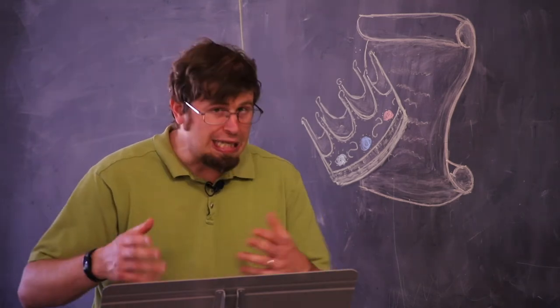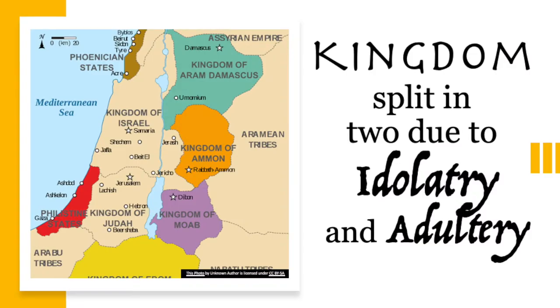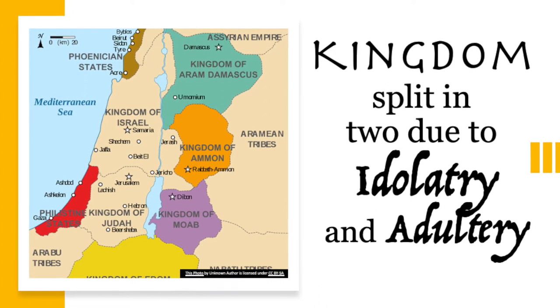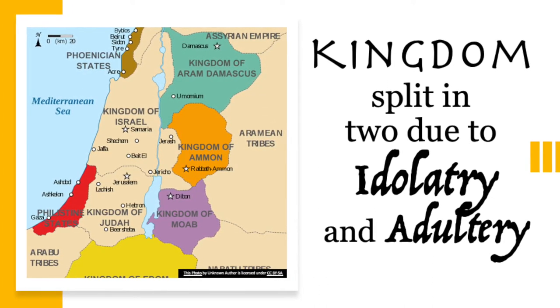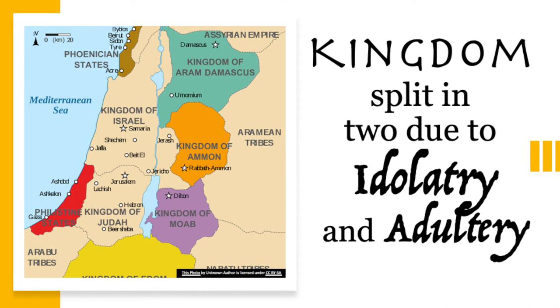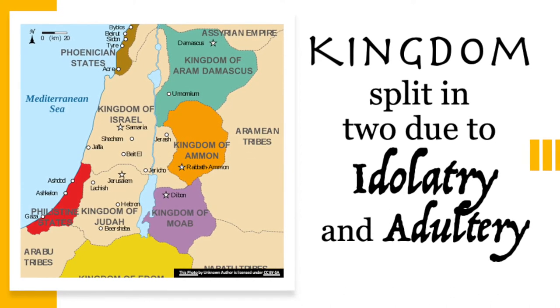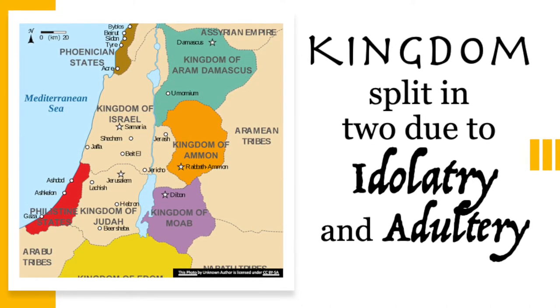The book can truly be called Kings, plural, because after Solomon, the kingdom is split into two. Solomon's son Rehoboam refuses the wise counsel of elders, instead listening to the cruel advice of his gang. David's dynasty now will only rule one tribe, the tribe of Judah.